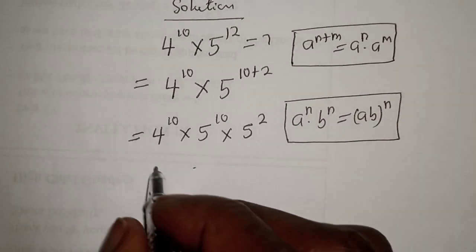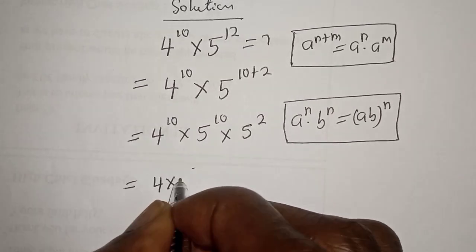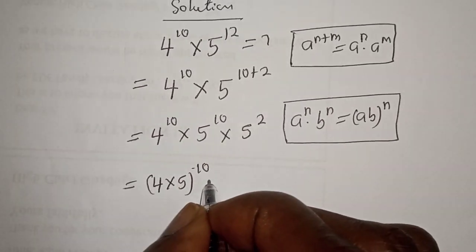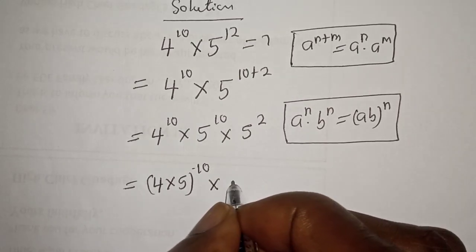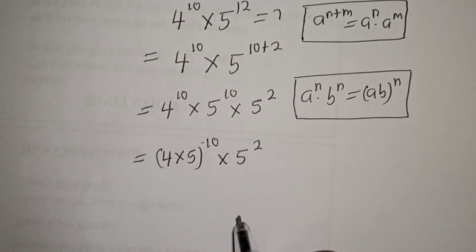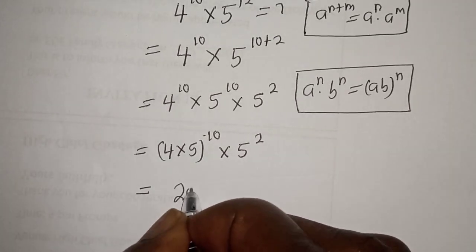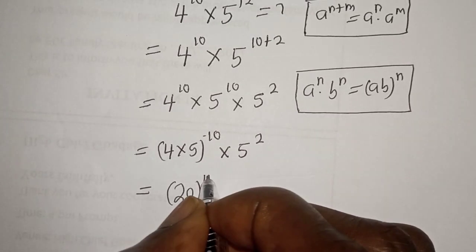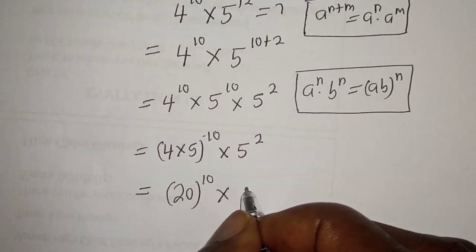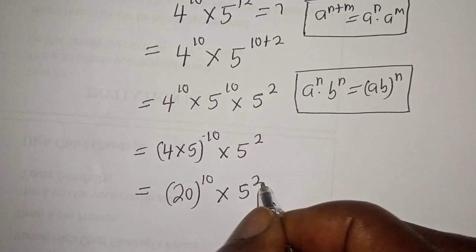Then, this can be written as 4 multiplied by 5, all raised to power 10, multiplied by 5 squared. Now, 4 times 5 is 20, so we have 20 raised to power 10 multiplied by 5 squared.